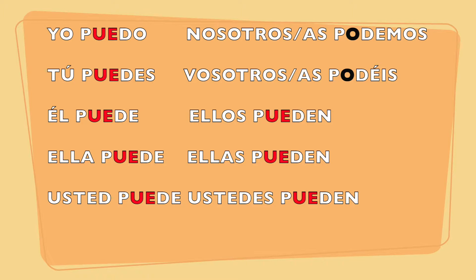Please note that in the first, second, and third person singular — yo, tú, él, ella, and usted — and the third person plural — ellos, ellas, and ustedes — we are changing from P-O-D to P-U-E-D. So essentially we're changing that O to UE. For nosotros and the vosotros form, you don't have to worry about stem-changing anything — one less thing to worry about.